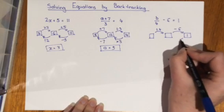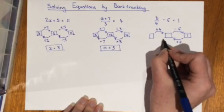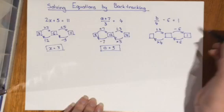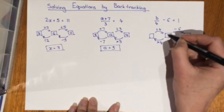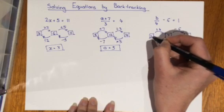To undo a minus 6 I would add 6. To undo a divide by 4 I would multiply by 4. So I have 1 plus 6 which gives me 7. 7 times 4 gives me 28.